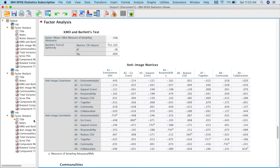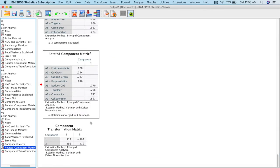So now if you go to your Rotated Component Matrix, can you see at this section here all the small values are already being suppressed.